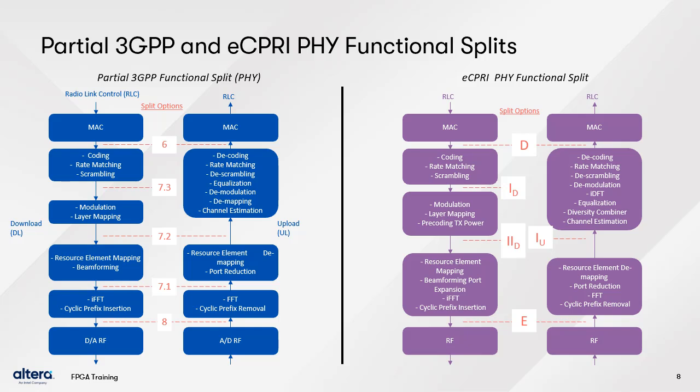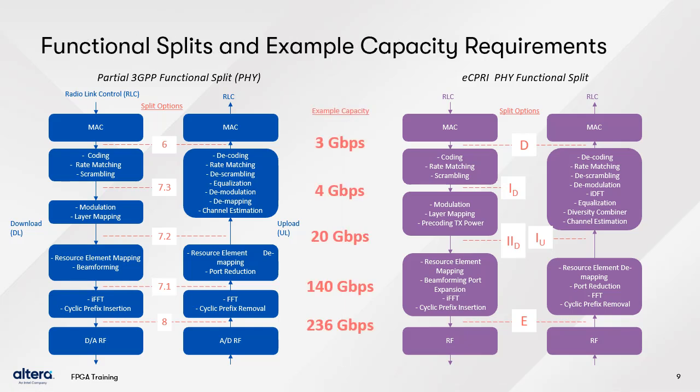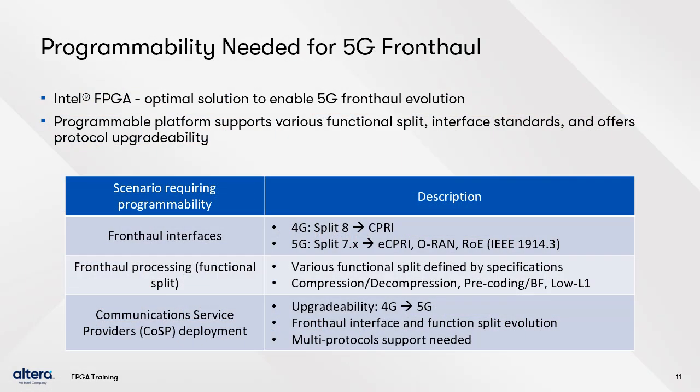These diagrams show a partial look at the functional splits, focusing on split 6 to 8 with the 3GPP PHY on the left and matching it to the eC-PRE PHY functional split on the right. The splits also allow the designer to control the required interface bandwidth. These numbers demonstrate some capacity examples resulting from a 236-GIG bandwidth requirement at the radio. The highlighted area calls out the 7.2x split specified by the O-RAN Alliance, where a 236-GIG bandwidth requirement at split 8 drops to a 20-GIG bandwidth requirement at split 7.2. The eC-PRE IP provides an excellent solution for your eC-PRE needs.